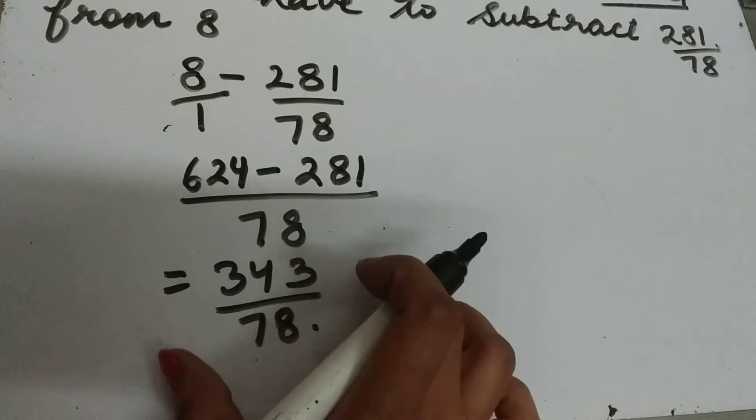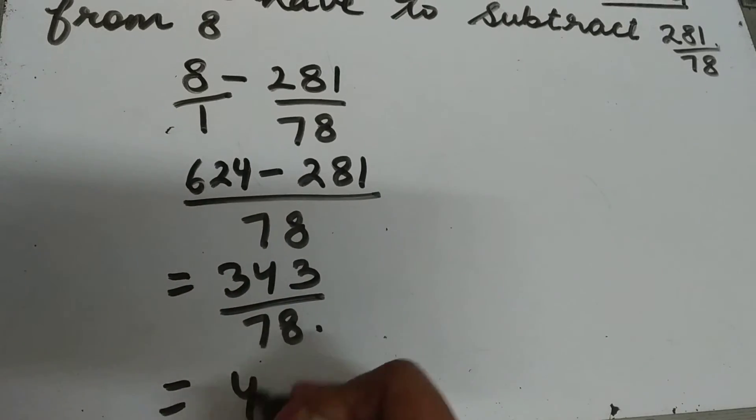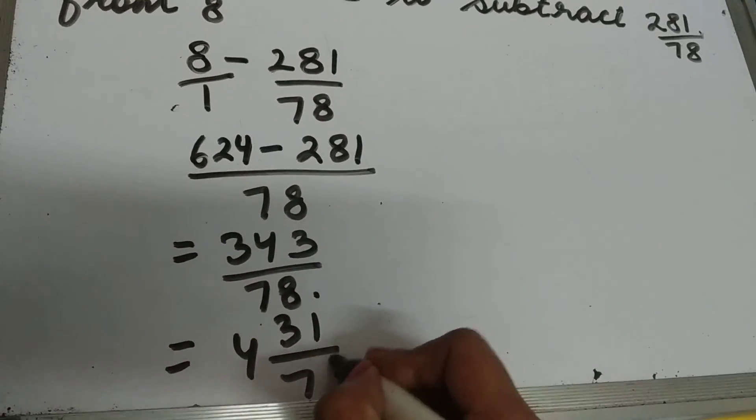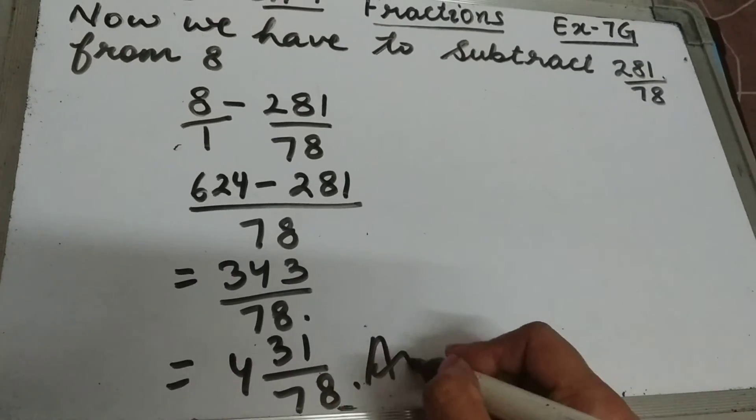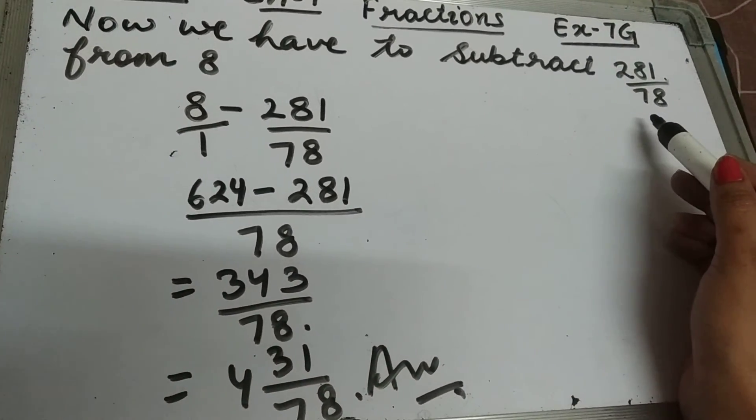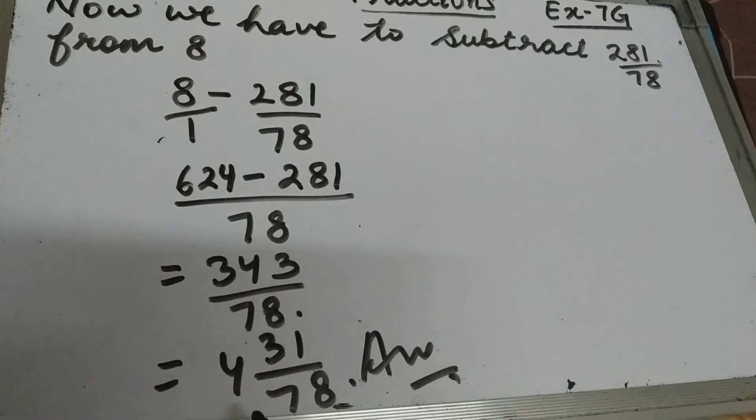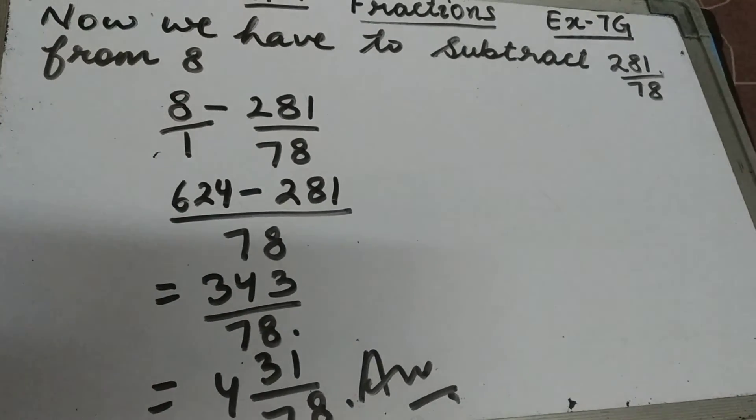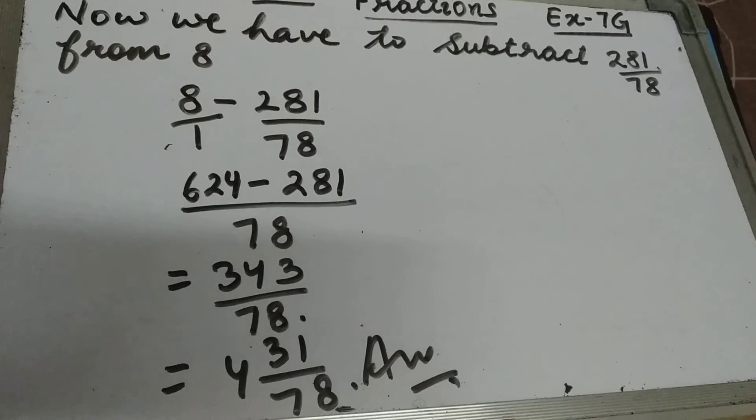This will be 343 upon 78. Now divide 343 by 78 to convert it into mixed fraction. This will be 4 31 upon 78. So this is your answer. When we subtract 281 upon 78 from 8, the result will be 4 31 upon 78.